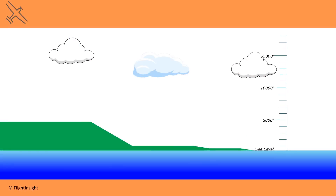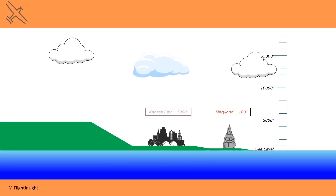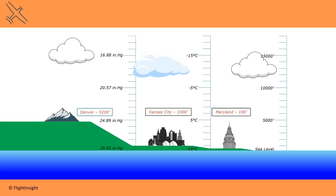So instead of saying the aircraft's performance today will be based on a temperature of 36 degrees Celsius, air pressure 30.05 inches of mercury, and 48 feet of altitude, we'll say that in standard conditions the aircraft will behave as if it were at 2,500 feet. This is our density altitude. We're creating standard conditions — fantasy land — and saying that if we put our aircraft into this fantasy land, it would behave the same way as it would today in the real world as it would at 2,500 feet in the fantasy land.